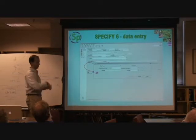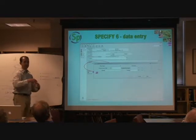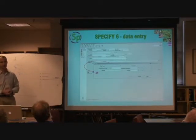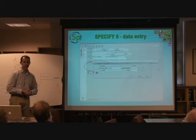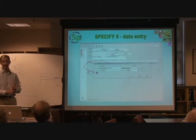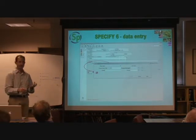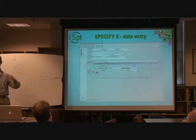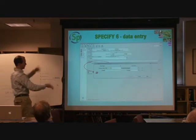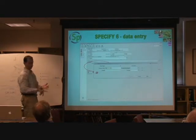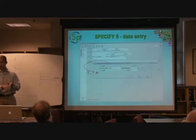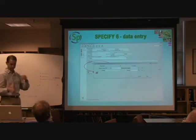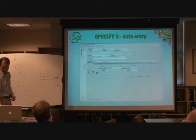You can literally go in, click the button, and attach any file that you can store in a system. Be it a PDF of the publication of the species, an image of the specimen in the field, an image of where you collected the specimen — such as an actual image of the river — and you can connect it up at any level: collection object, collecting event, locality, geography, wherever it may be.